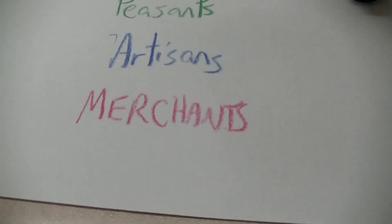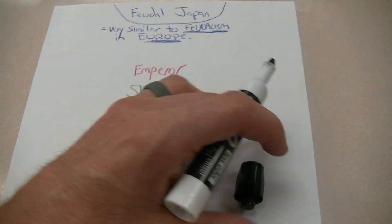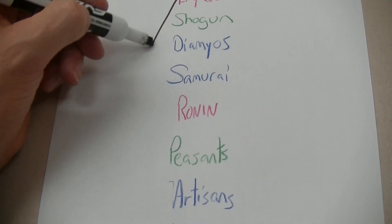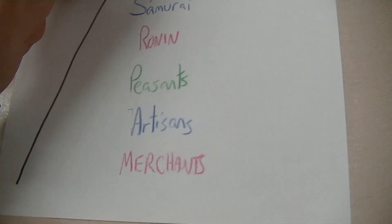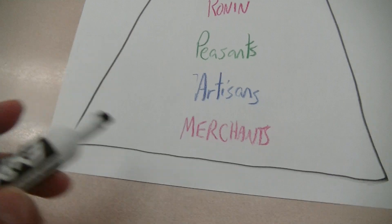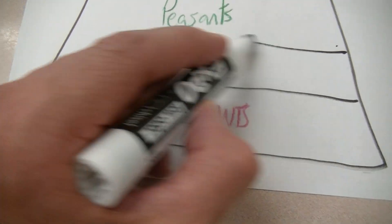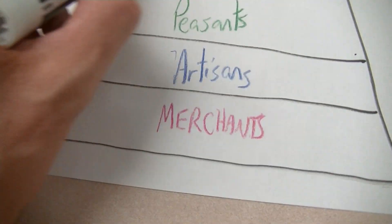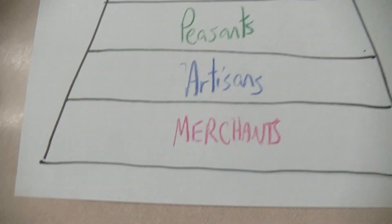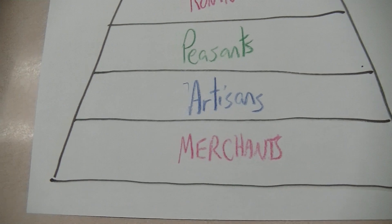Now let's turn all this into a pyramid. I'm going to switch my colors and draw it out — there's the bottom, there's the top. I'll divide them up: at the bottom the merchants and artisans, then the peasants, then the ronin and samurai, then the daimyo, the shogun, and the emperor at the top.